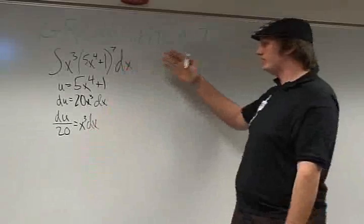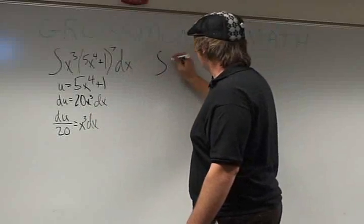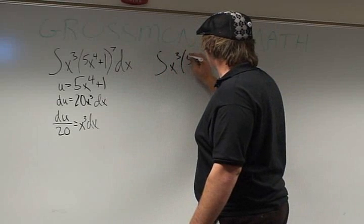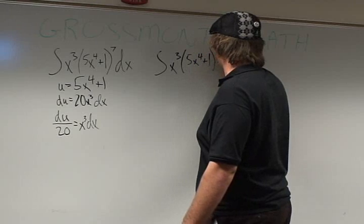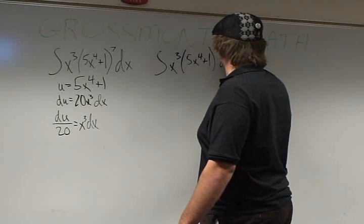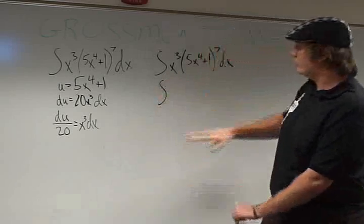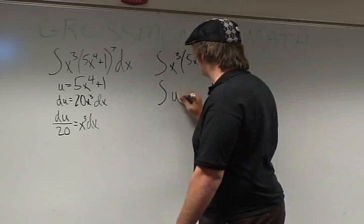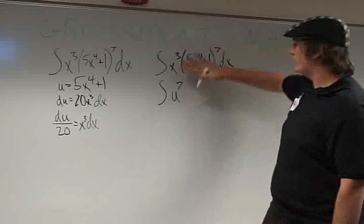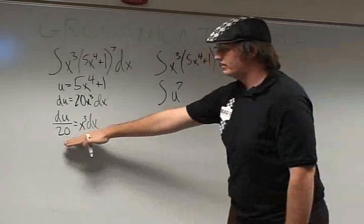So now it's easier for me, probably for you too, to write this over here. So here we'll substitute, we'll put our u in. So it'll be u to the 7th, and then we're left with x cubed dx, so that's our du over 20.